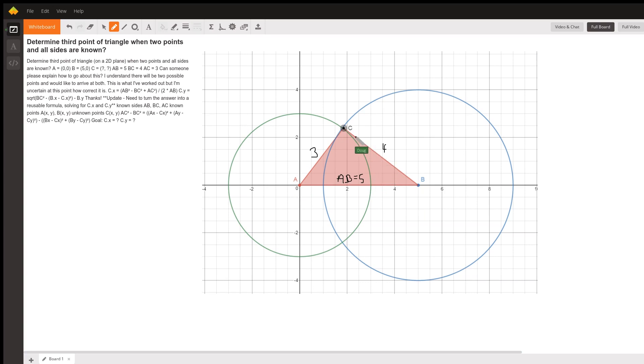By the way, that's a 3, 4, 5 right triangle, so this is a right angle, but that's neither here nor there. Question is, how do you find out the location of point C?